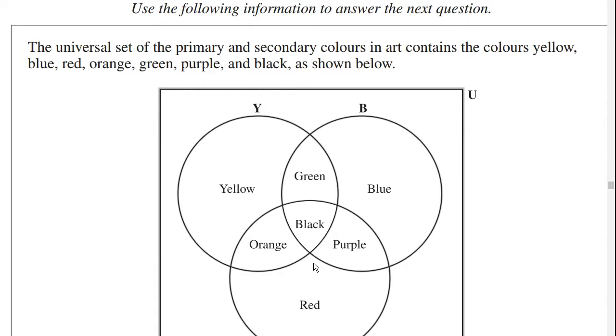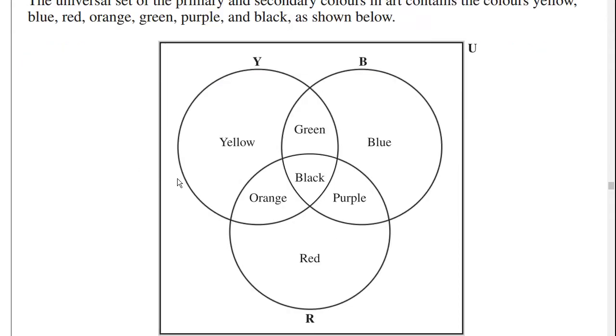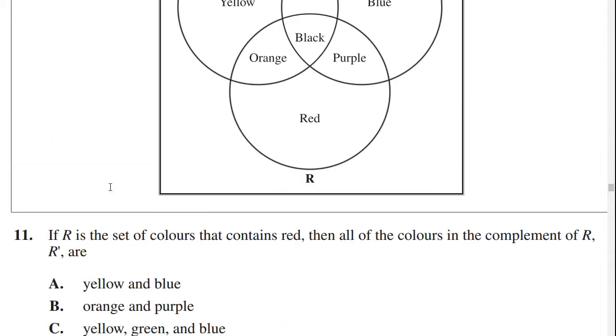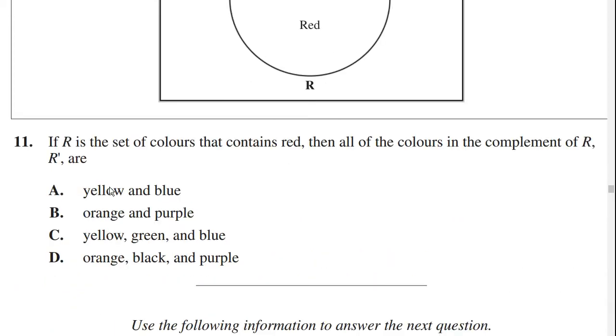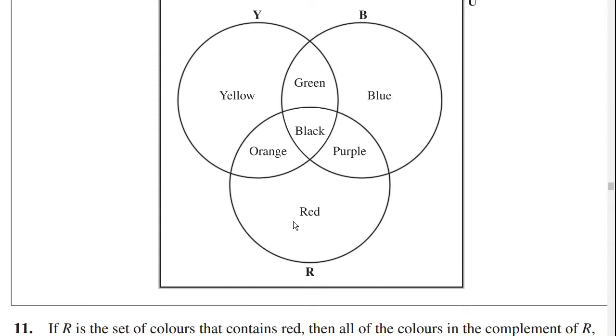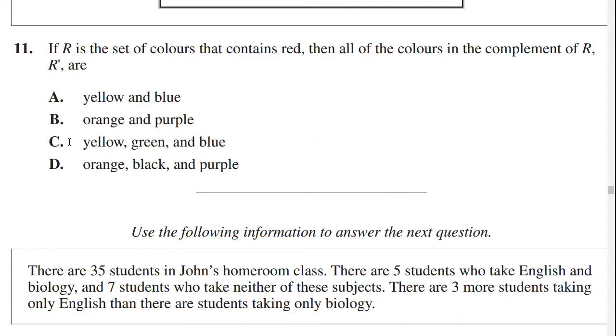Next question. The universal set of primary and secondary colors in art contains yellow, blue, red, orange, green, purple, black, as shown below. If R is the set of colors that contain red, then all the colors in the complement of R, in other words R prime. So when they say complement, what they mean is everything outside. R is the set of colors that contain red. So R is red, orange, black, and purple. Anything outside of R is yellow, green, and blue. Simple as that. Yellow, green, and blue. C is your answer.